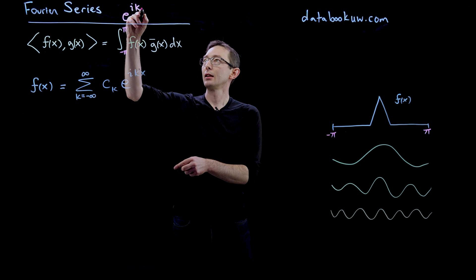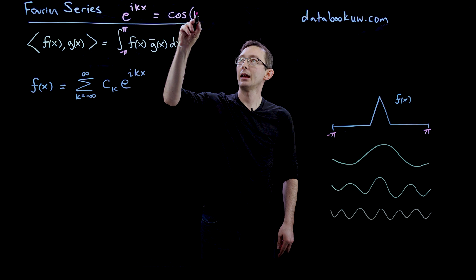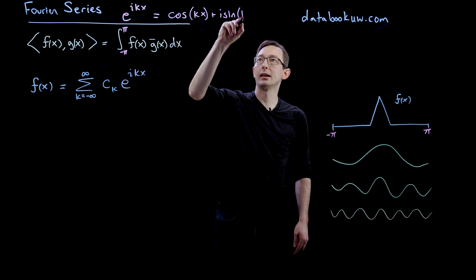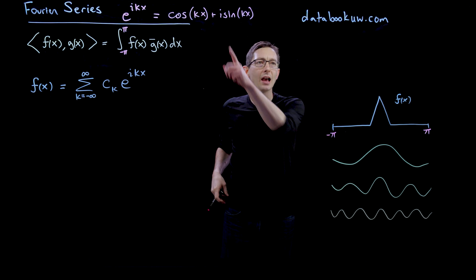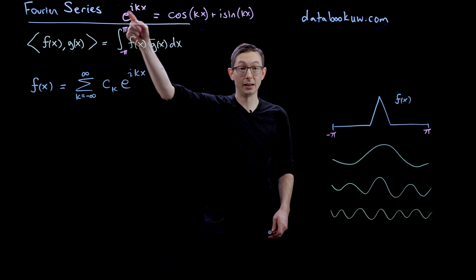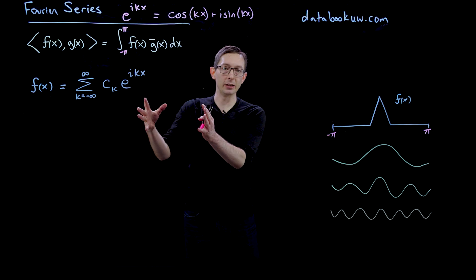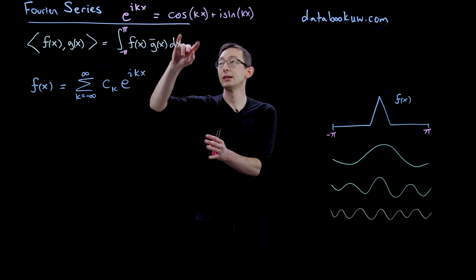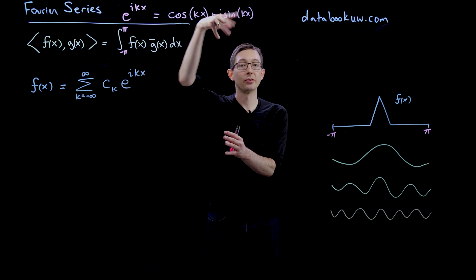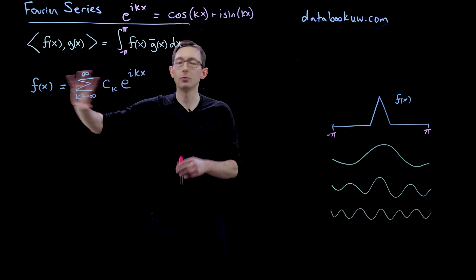Recall Euler's expansion: e to the i kx is just cos(kx) plus i·sin(kx). This is easy to see if you take the Taylor series expansion of e to the x and plug in i kx — collect all the real terms and you recover the cosine series; collect all terms with an i coefficient and you recover the sine Taylor expansion.